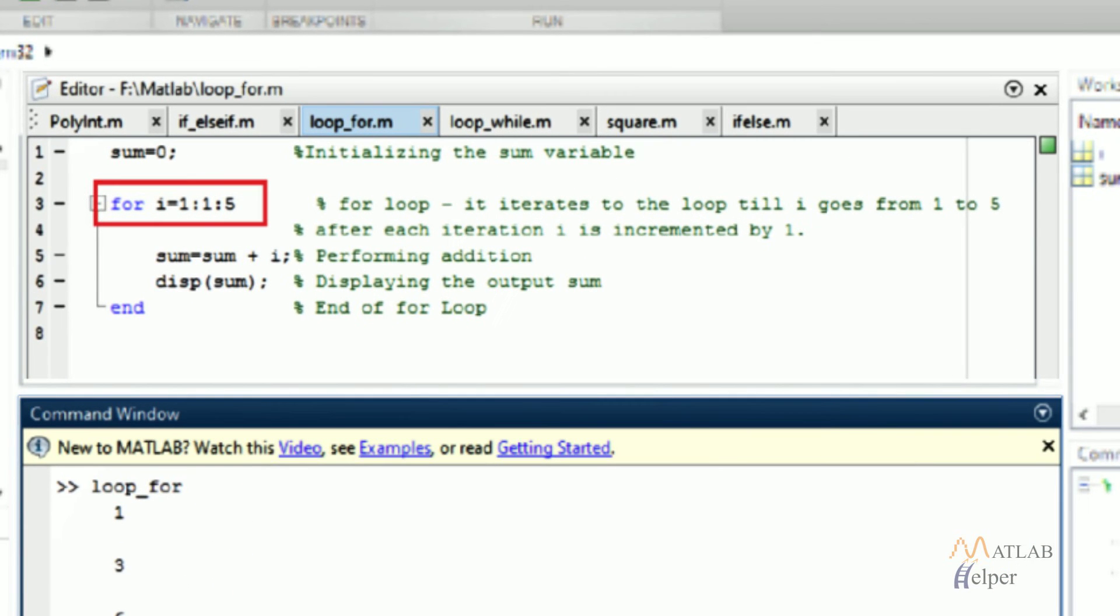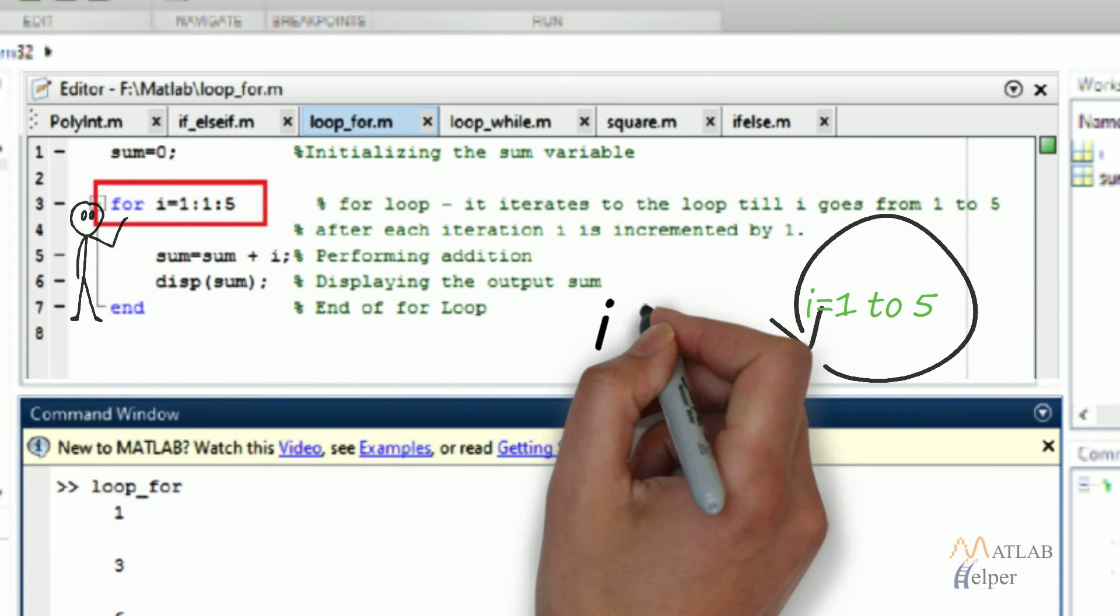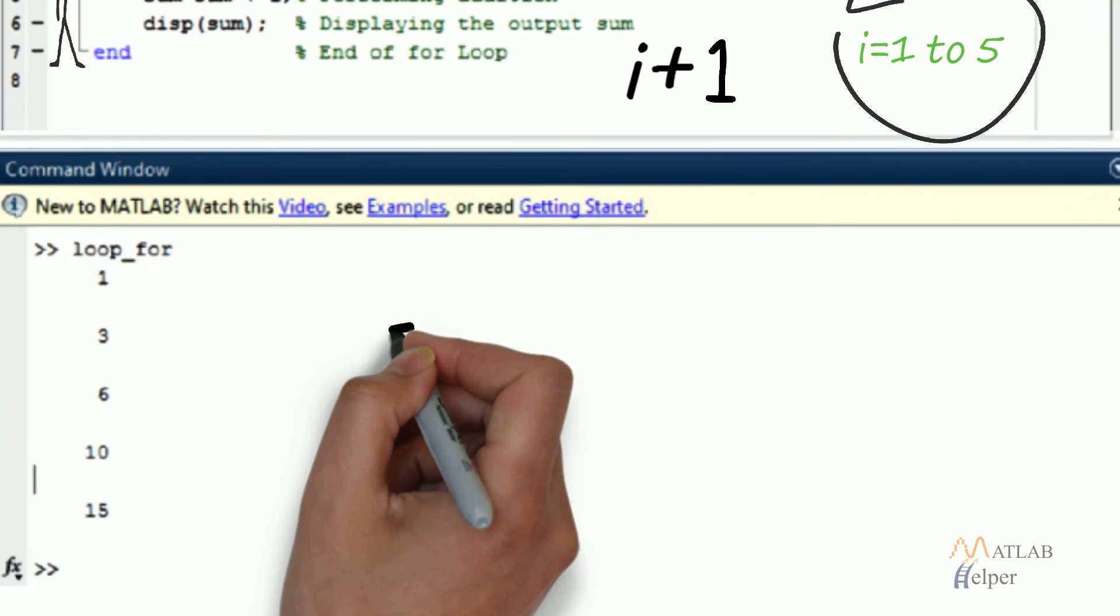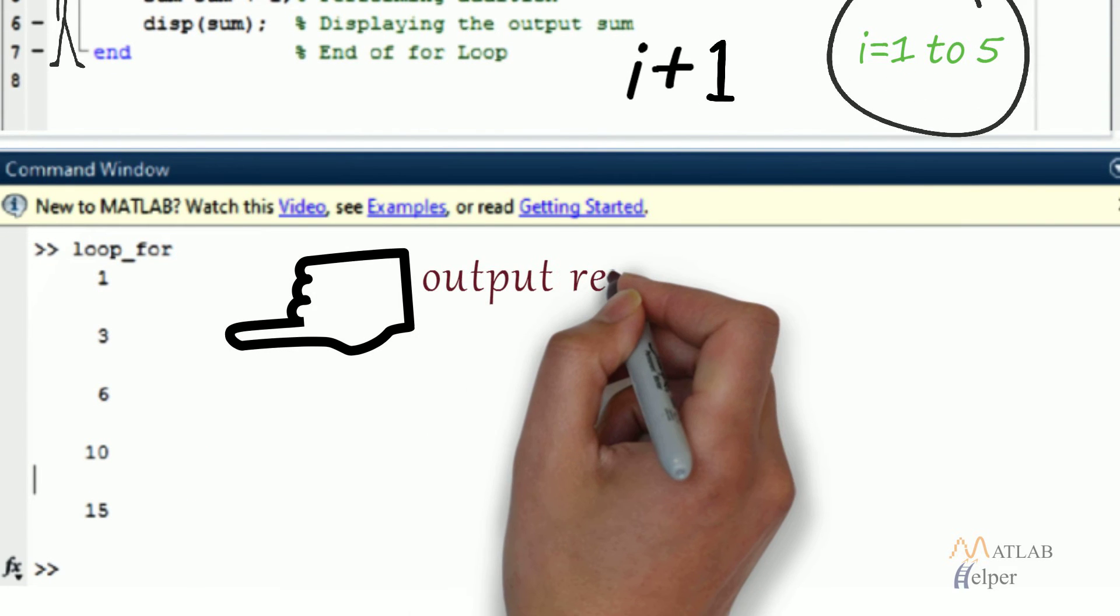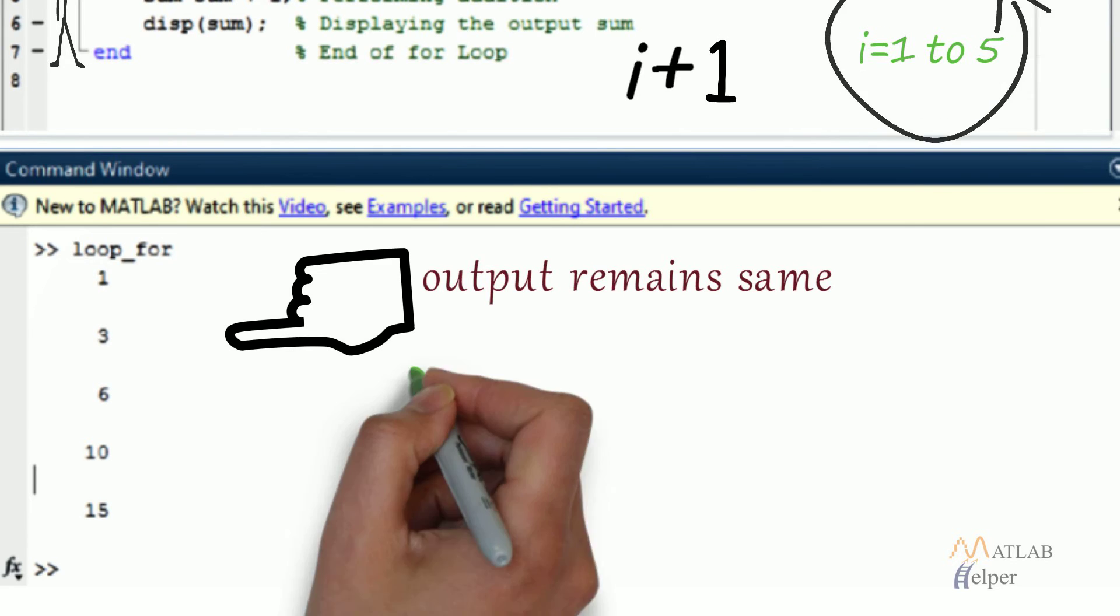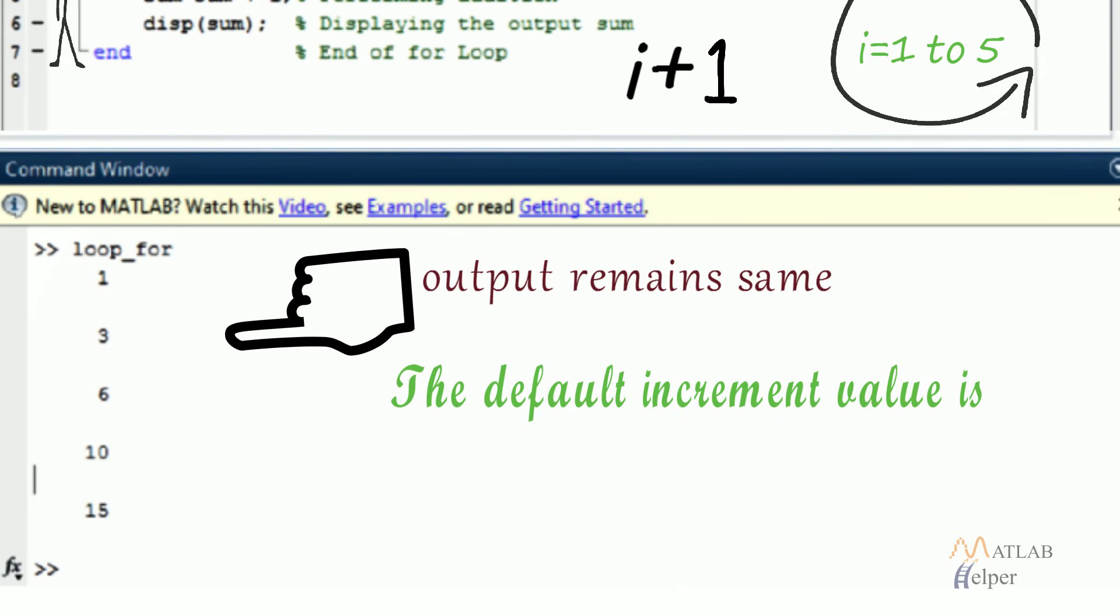For i=1:1:5 tells that the loop gets executed while i value goes from 1 to 5 with an increment of 1 in i value after each iteration. As can be seen, the output remains the same. The default increment value is 1. Here we can specify the increment value explicitly.